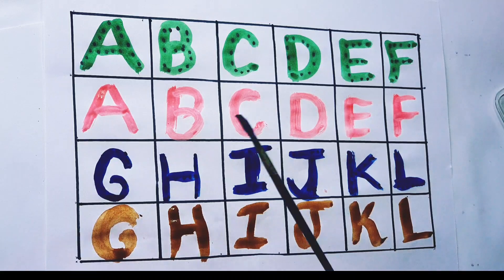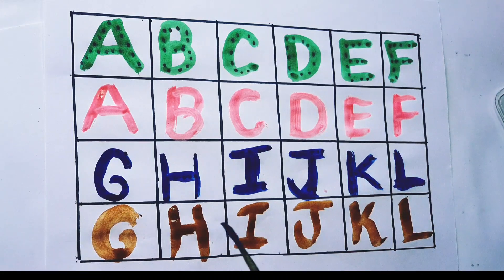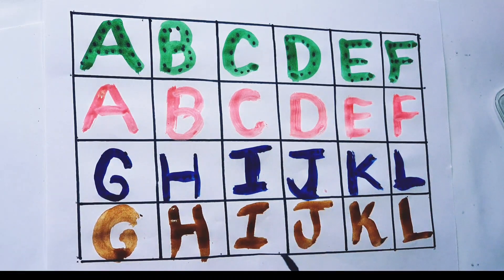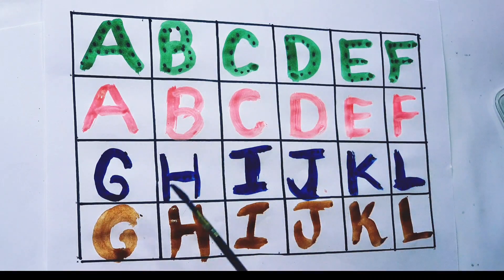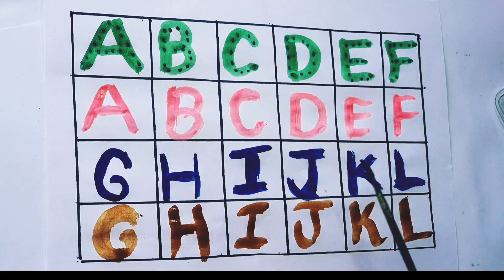So kids, what we learned today? We learned green color, pink color, blue color and brown color, A, B, C, D, E, F, G, H, I, J, K, L.